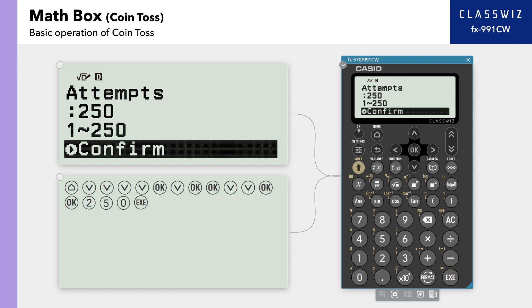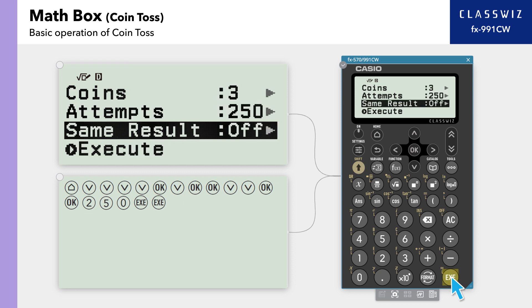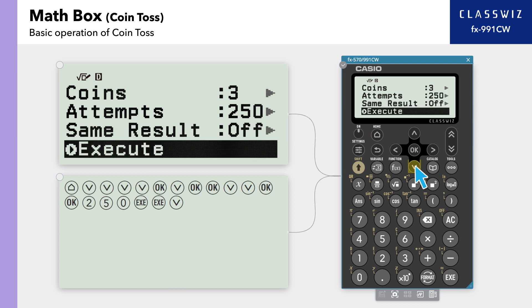On Confirm, press Execute. Leave Same Result in the off position. Move to Execute, then press Execute.